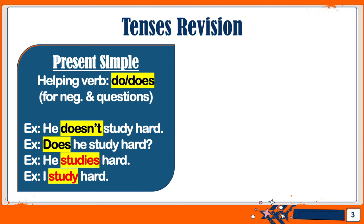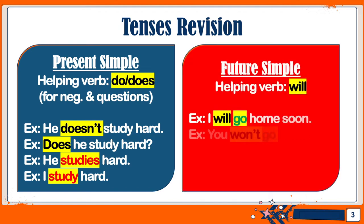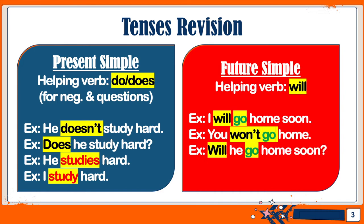Now let's take a look at the second tense we are going to use: the future simple. It's simple and easy. The helping verb here is 'will,' so we just need 'will' plus the base of the verb. For example: 'I will go home soon,' or 'You won't go home' for a negative sentence, or 'Will he go home soon?' for a question.